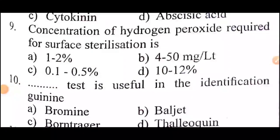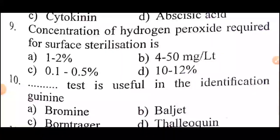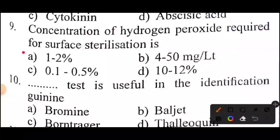Next question: The concentration of hydrogen peroxide required for surface sterilization is — answer option A — 1 to 2 percentage.